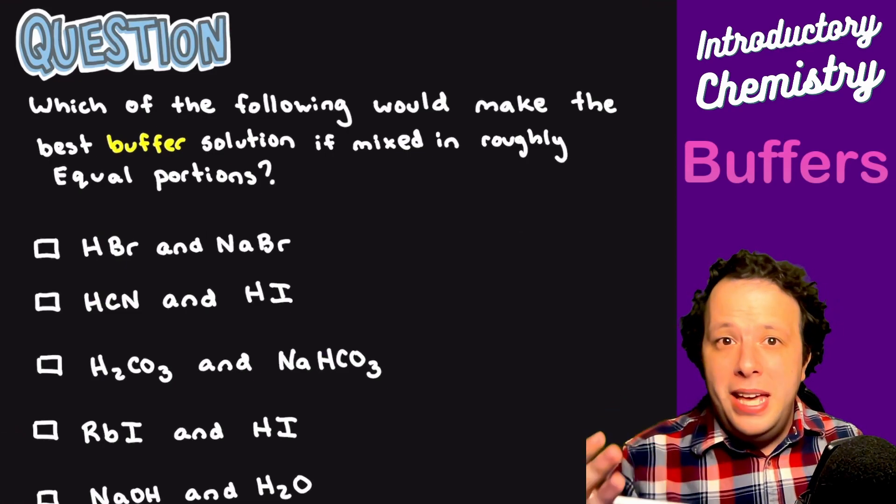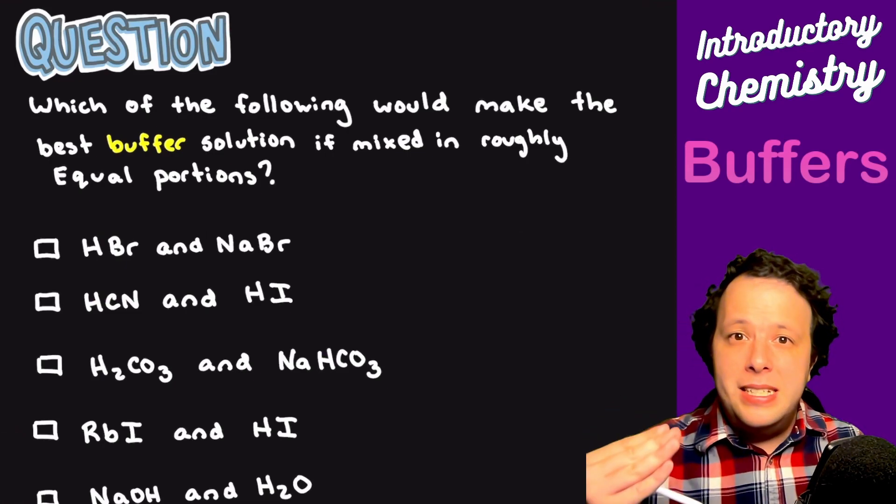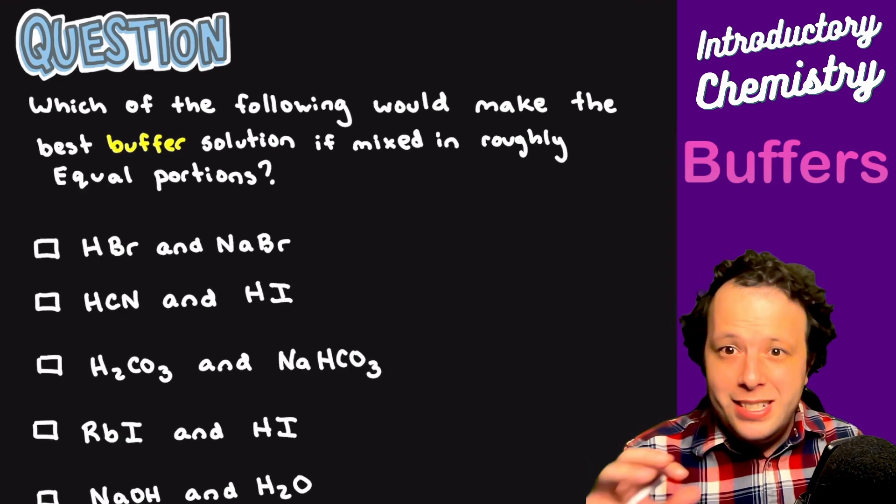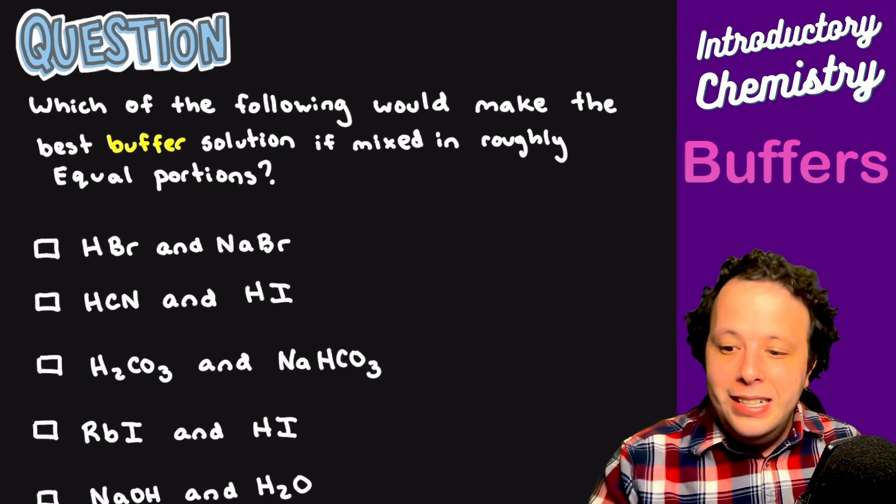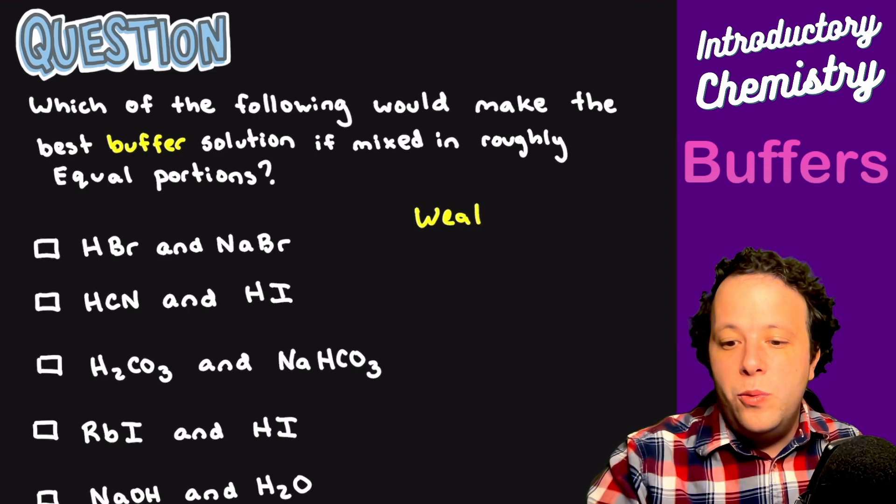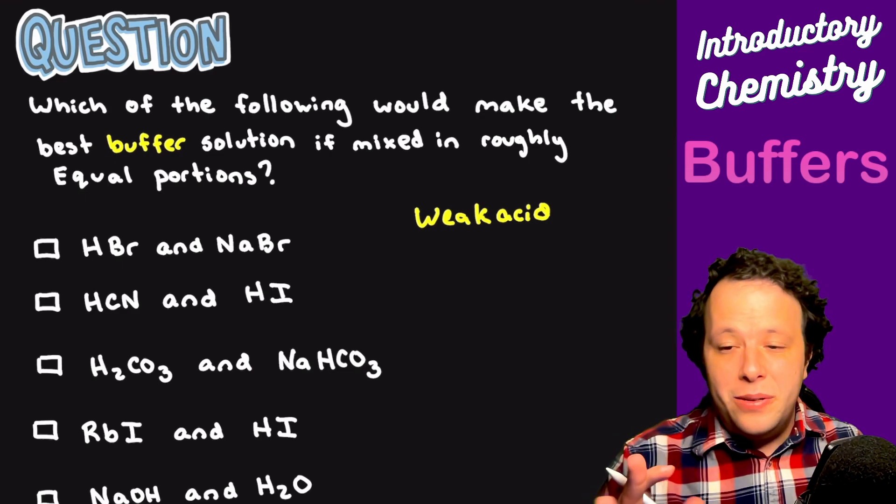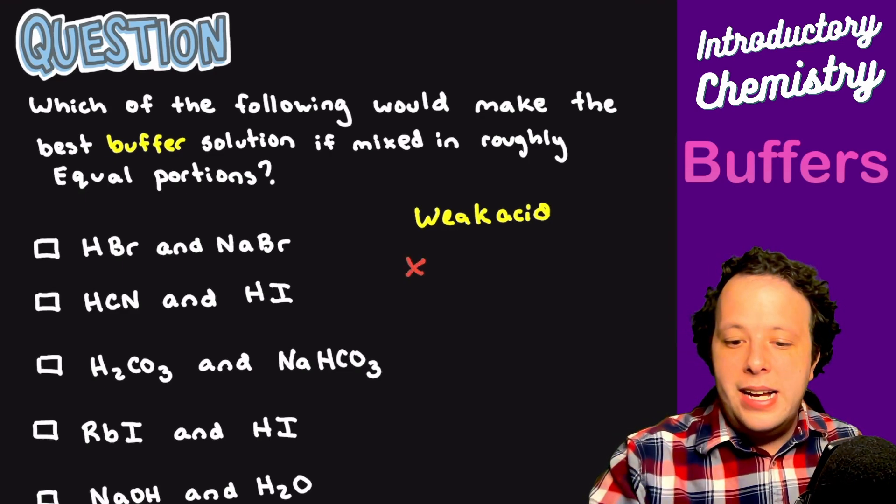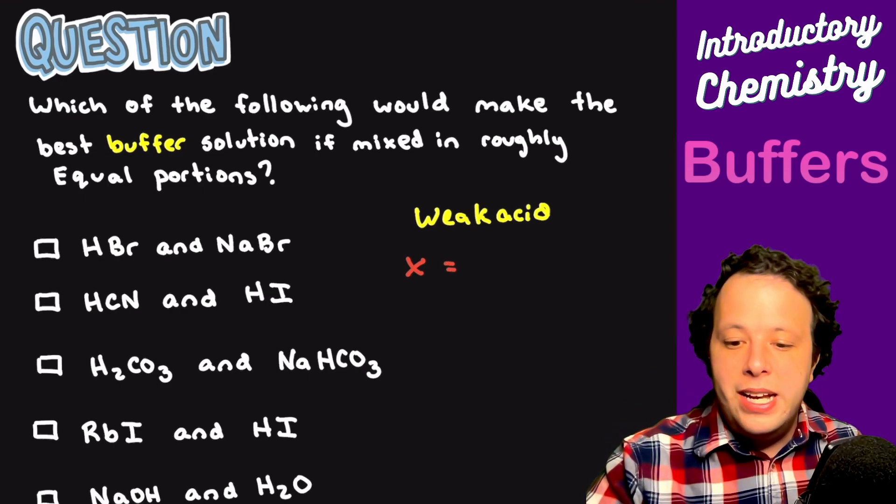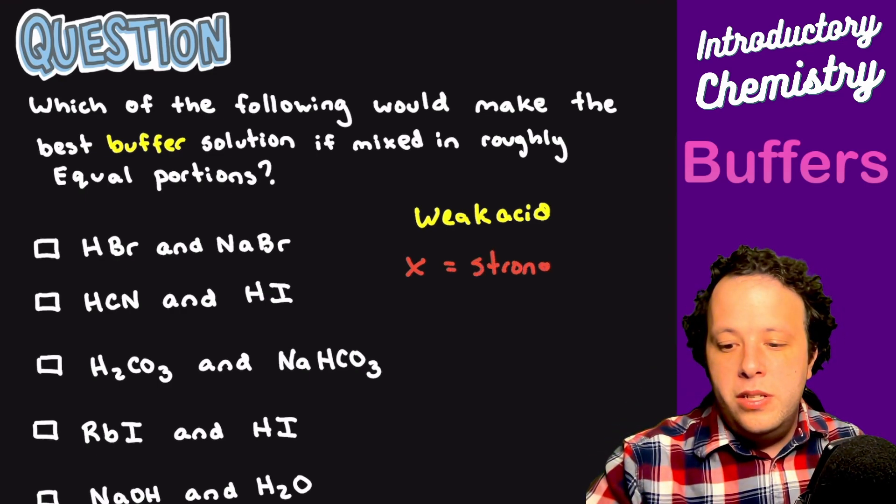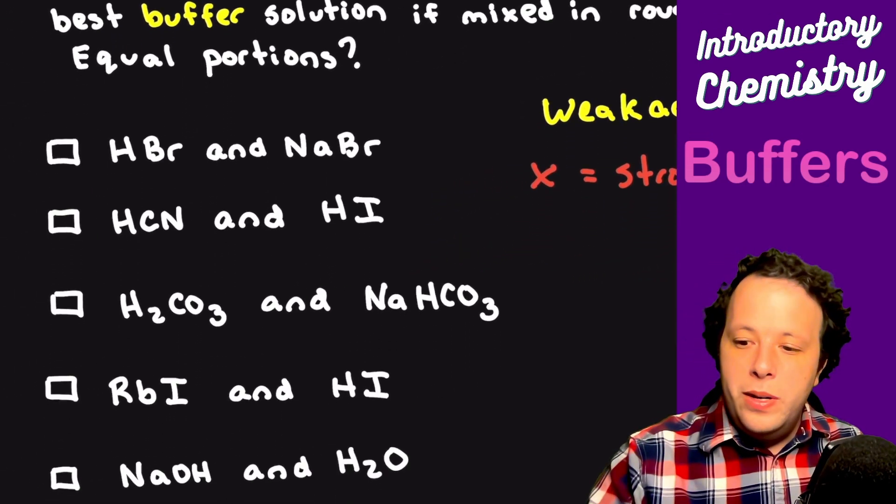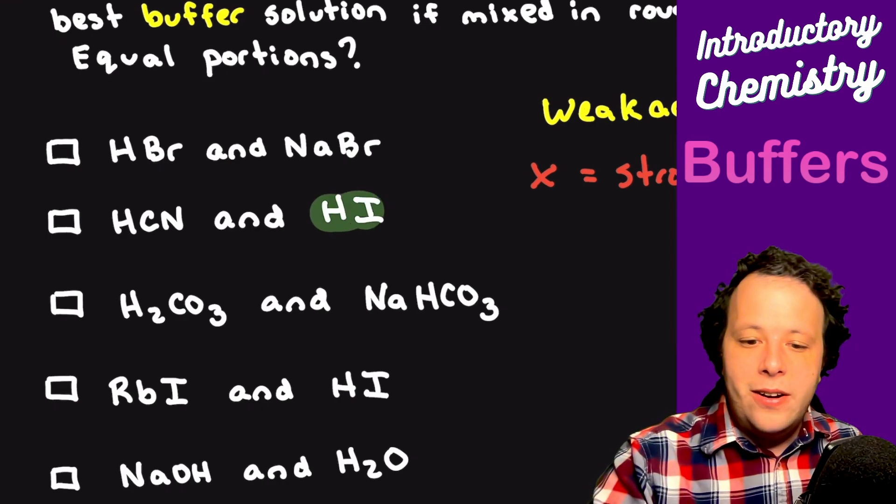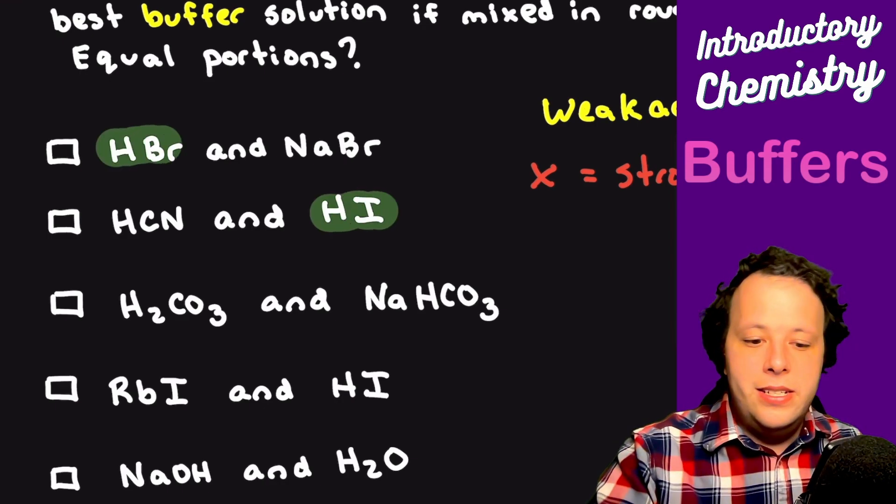If I wanted to pick how you would make the best buffer solution if they were mixed in equal portions, how would you do that? The first checkbox is that it needs to be a weak acid, or a weak base. Let's go with a weak acid to make it easier. We're going to add an X to anything that's considered to be a strong acid. That means no. So let's look at anything that can't be used.